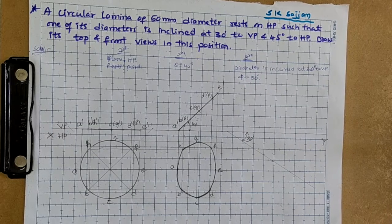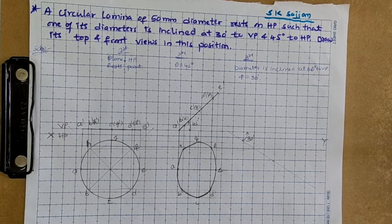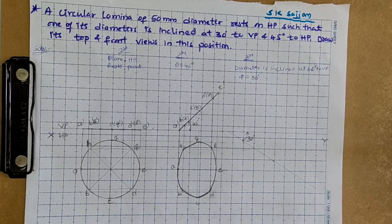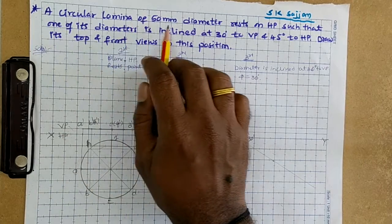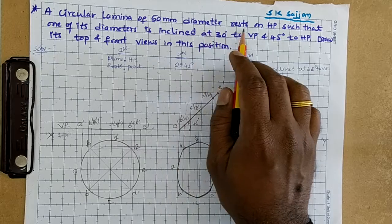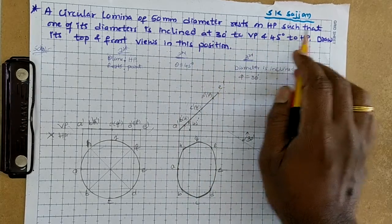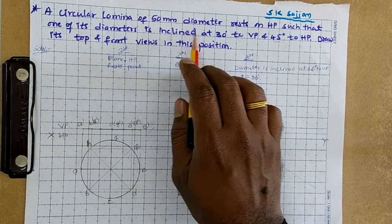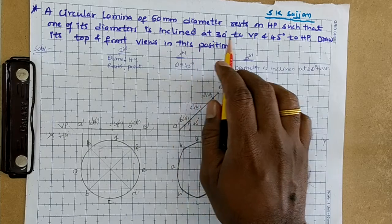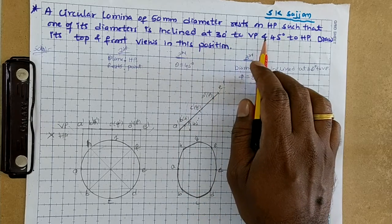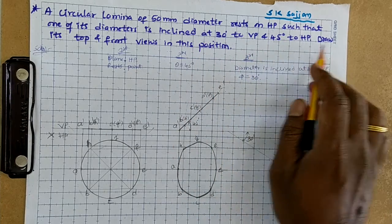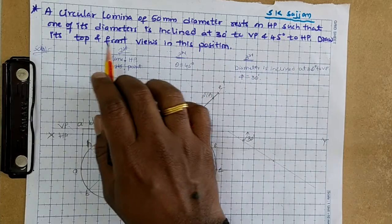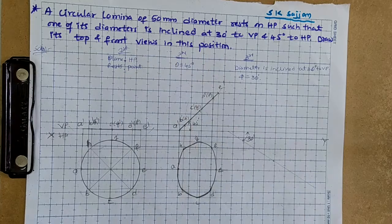Hi friends. In this video we are going to learn the projections of plane surface. The problem is: a circular lamina of 50 mm diameter rests on HP such that one of its diameters is inclined at 30 degrees to VP and 45 degrees to HP. Draw its top and front views in this position.